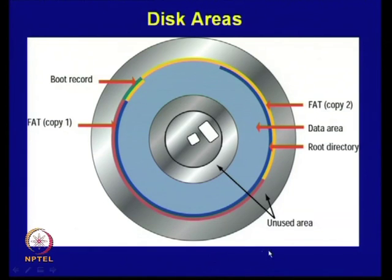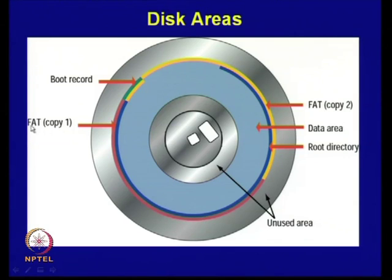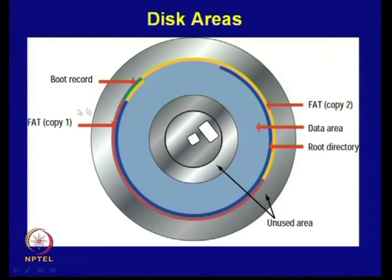In the diagram, different areas are shown: the boot sector is the green portion, then the file allocation table (FAT) shown as a red track, duplicated for higher redundancy so there are two copies — FAT copy 1 and FAT copy 2. The root directory is shown as a blue track. These components — boot sector, FAT copies, and root directory — are essentially overhead, and user information is stored only in the data area of the disk.